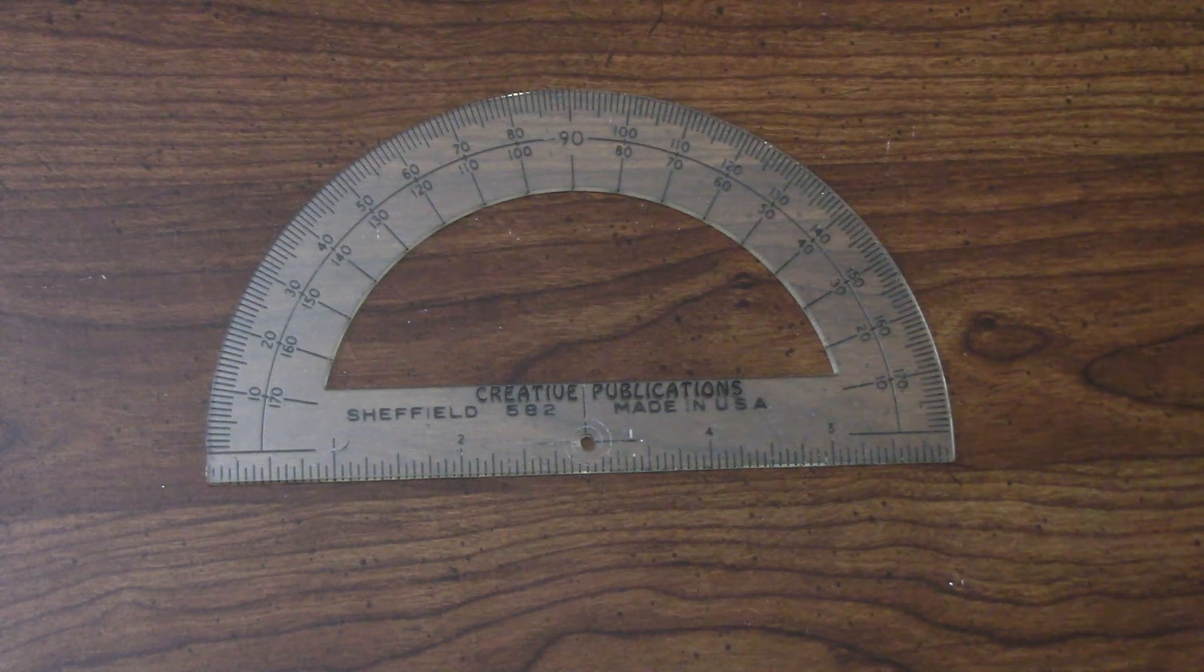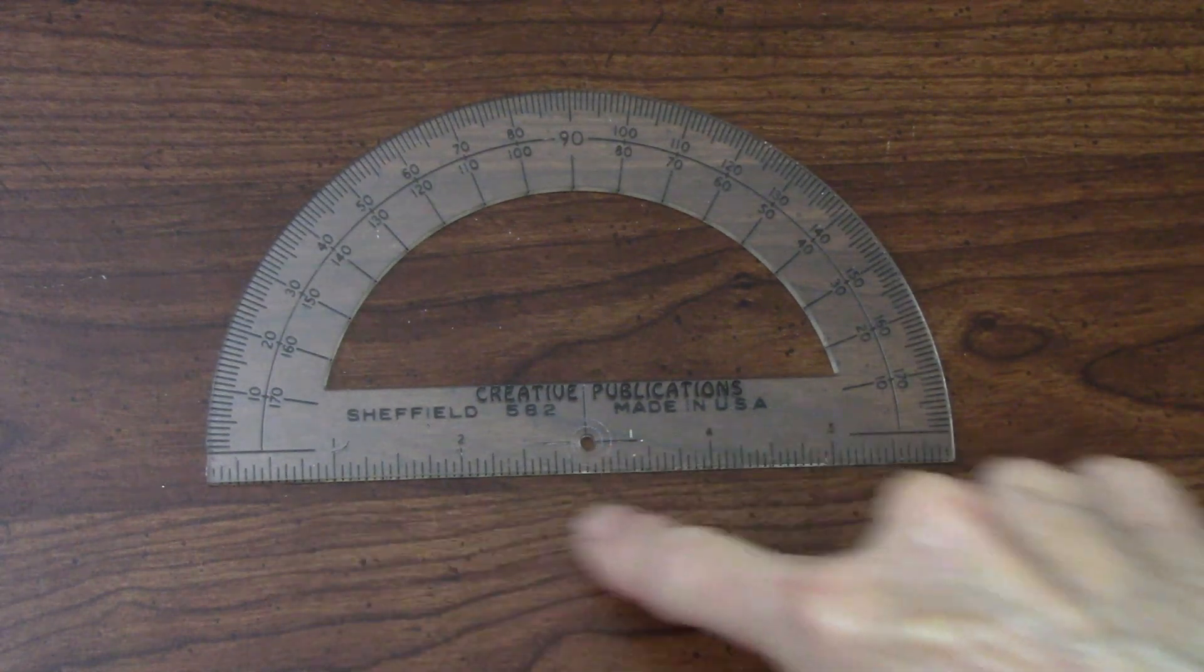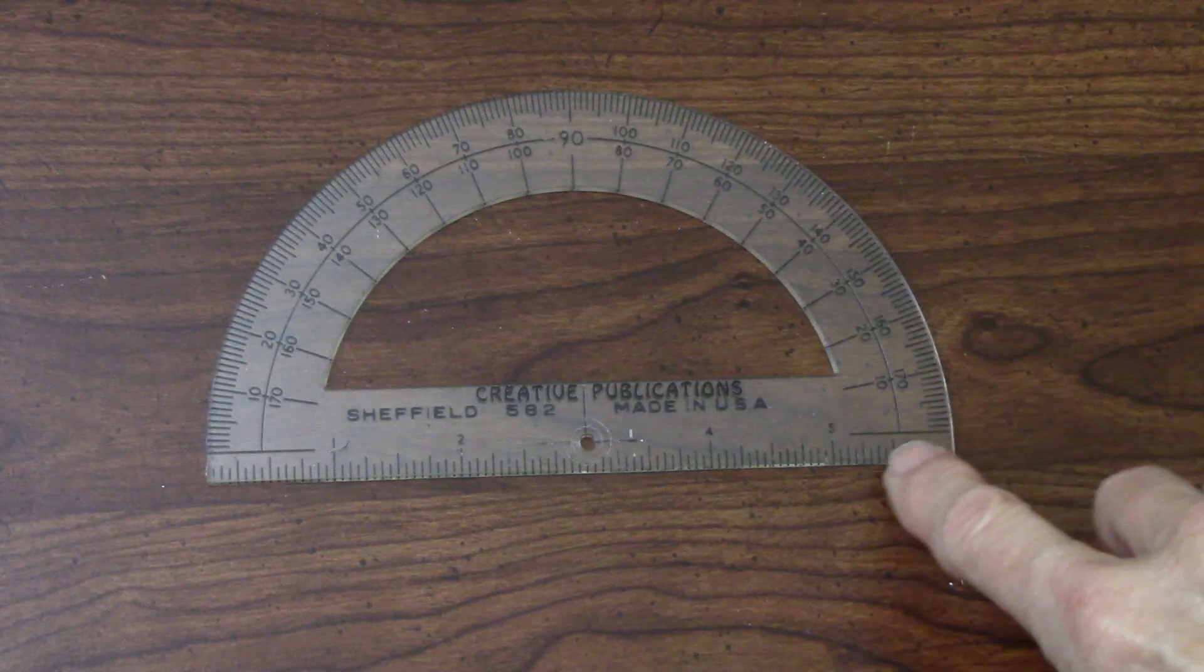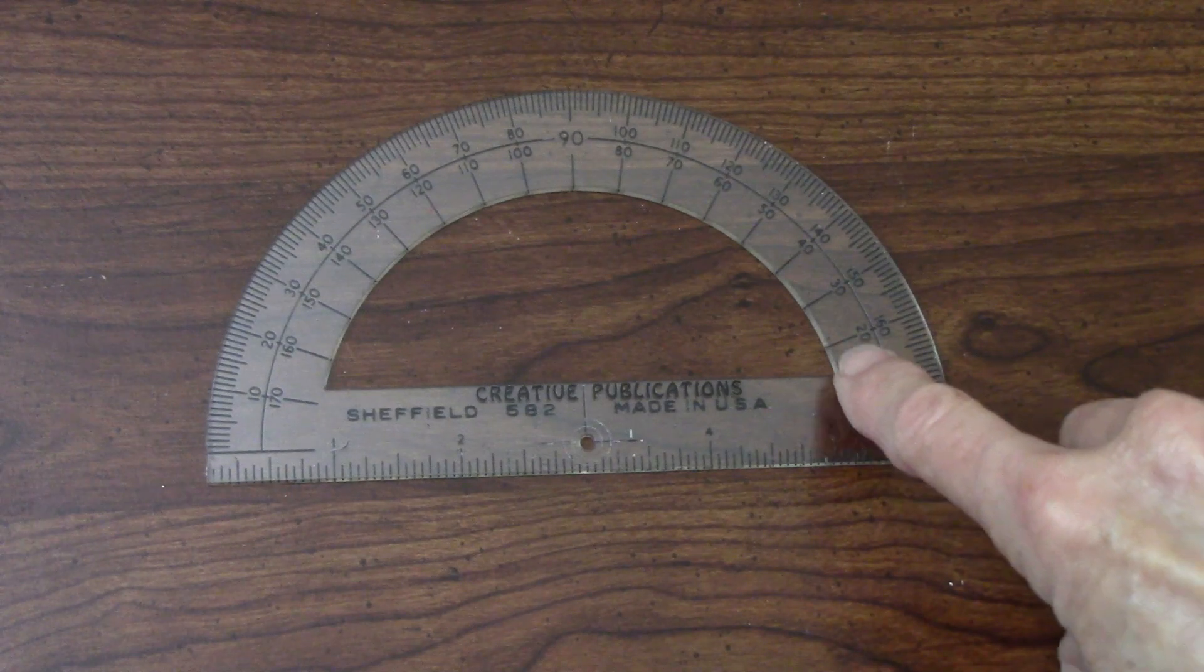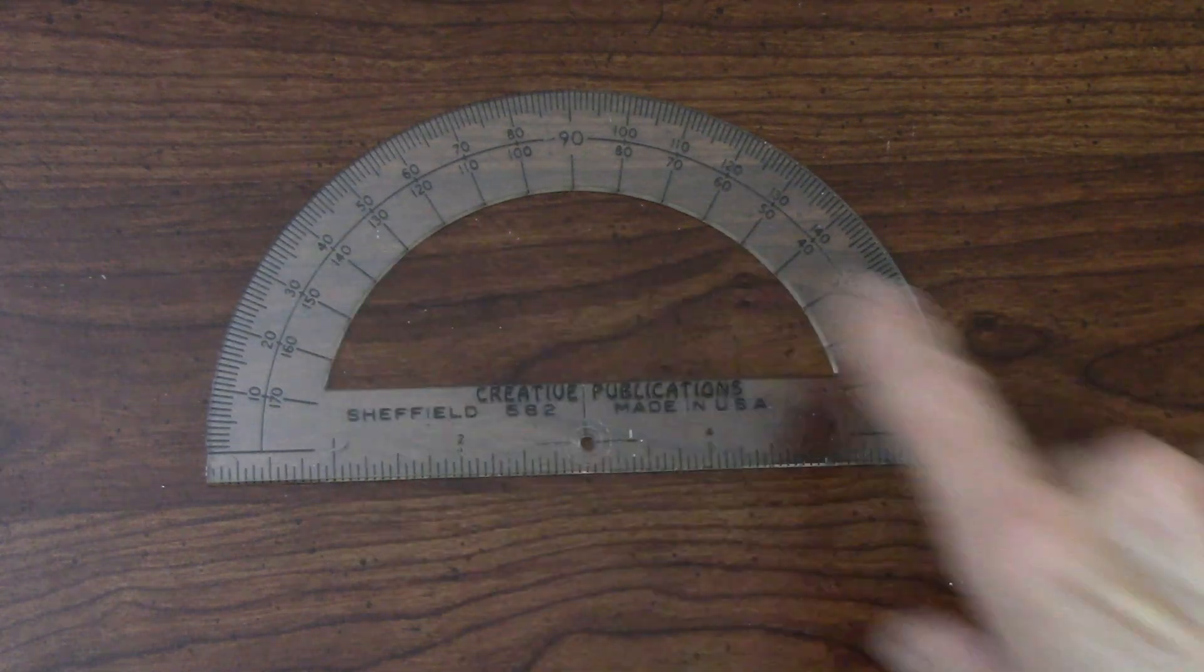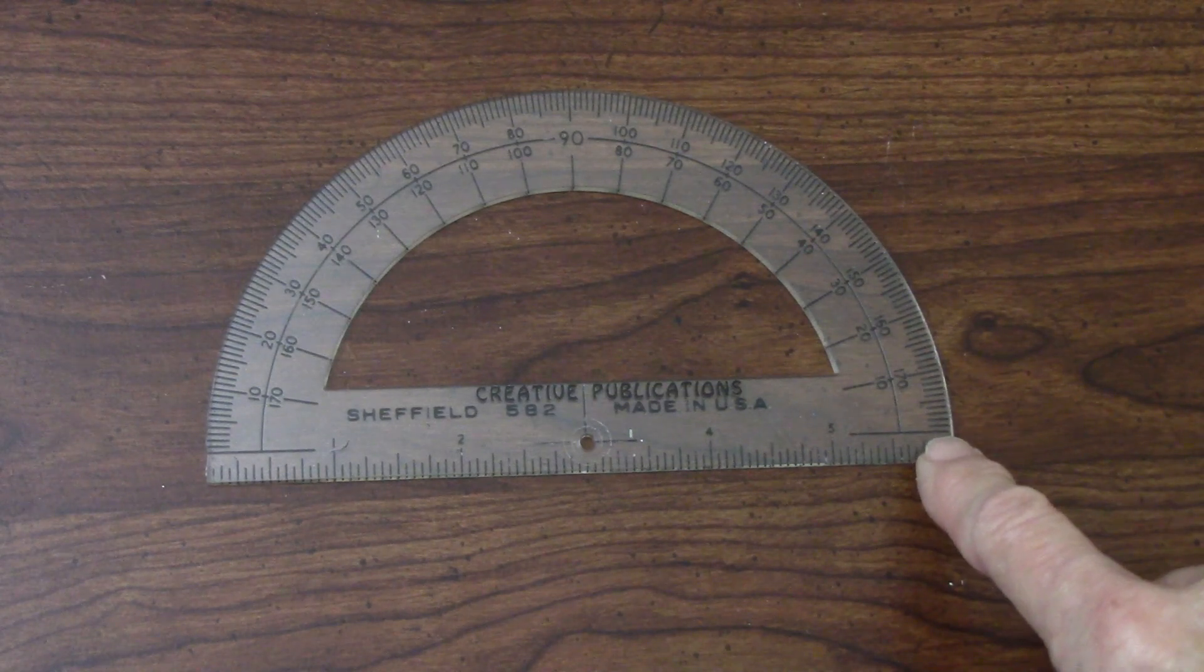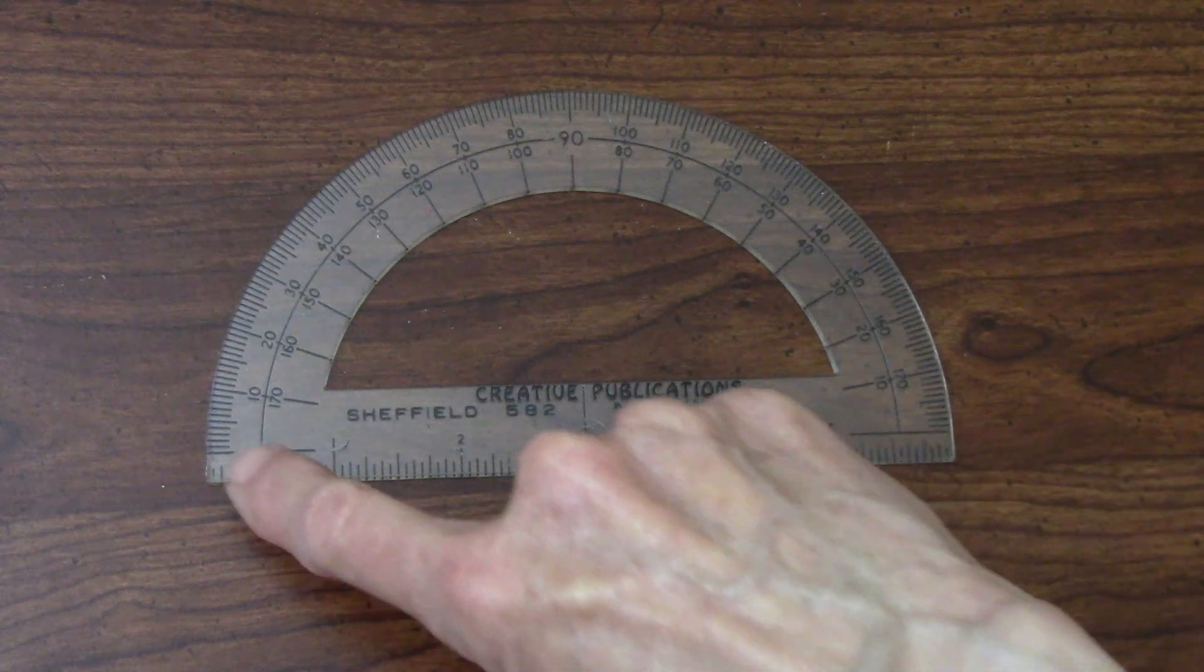You'll notice it's got a circle at the very center here along a straight line, and there's two number systems. On this protractor it starts at zero and goes up, and the numbers are increasing on the inside. On the other side it's actually 180 and then they count down as they go around to the opposite side over here.